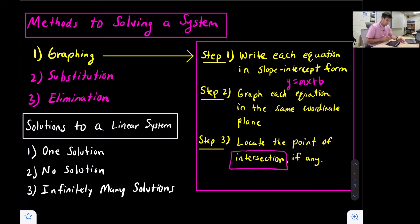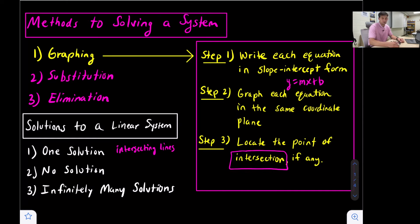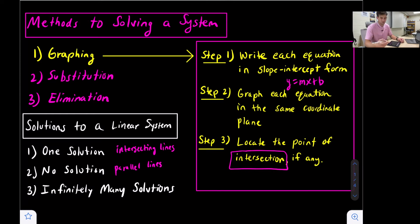That brings us to the types of solutions we could have. We could have one solution, no solution, or what's called infinitely many solutions. When we're talking about graphing, one solution is when we have intersecting lines — we graph our two lines and they intersect at one point. No solution would be if we have parallel lines, because if the intersection is the solution and there's no intersection, there's no solution.